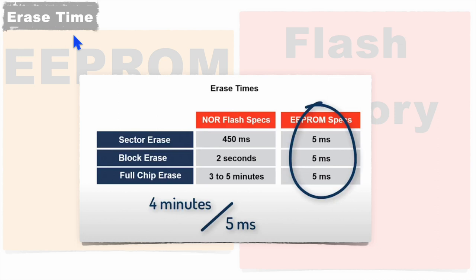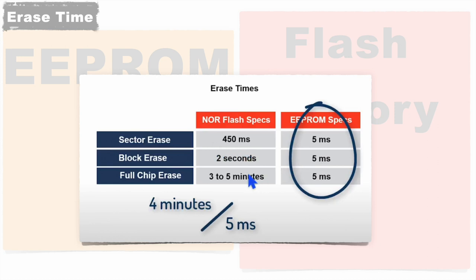The next and last difference is erase time. EEPROM memories can be erased very fast compared to flash memories. At all levels — whether sector erase, block erase, or full chip erase — EEPROM takes only 5 milliseconds. Flash memories, on the other hand, take comparatively much higher time, and a full chip erase can take almost 3 to 5 minutes.